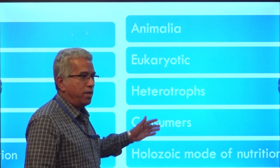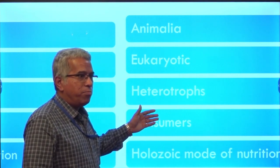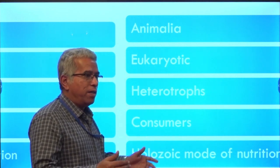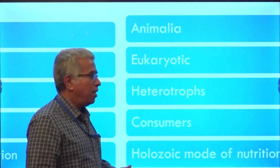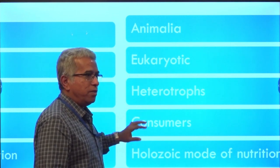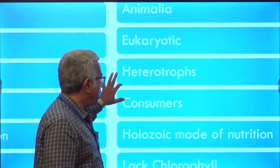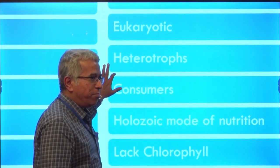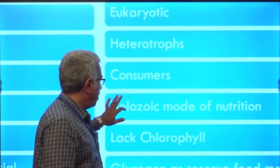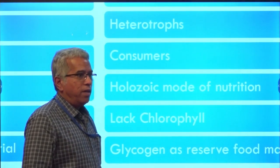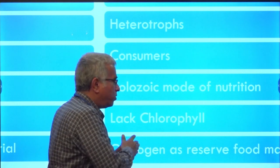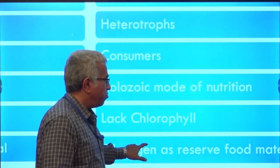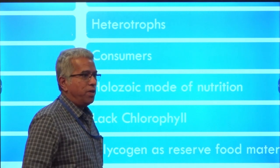The members of kingdom Animalia are eukaryotic and heterotrophs, meaning they cannot prepare their own food materials on their own. They depend on either plants or other animals, and hence these are also called consumers. Holozoic mode of nutrition is found in Animalia, and they lack chlorophyll. Glycogen is the reserve food material in the members of Animalia.